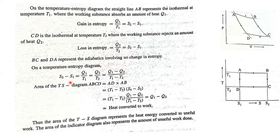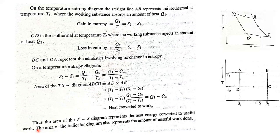S2 minus S1 is equal to Q2 divided by T2. The area ABCD: AB is isothermal with entropy change S2 minus S1, and AD is isothermal with temperature difference T1 minus T2. Multiplying, area ABCD equals (T1 minus T2) into (S2 minus S1), which equals Q1 minus Q2 — that is the work done. Thus, the area of the T-S diagram represents the heat energy converted into useful work.